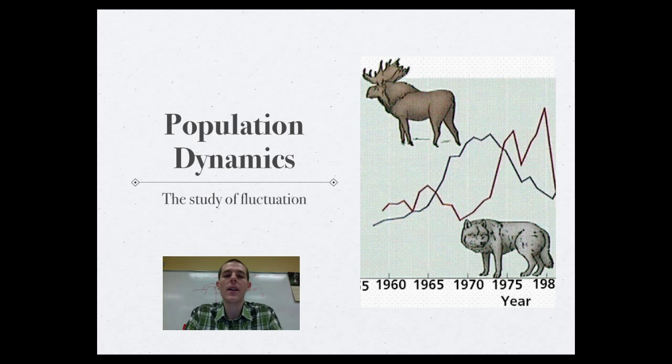And final slide for the day is population dynamics. Population dynamics is the study of fluctuations in population size, where they go up and they go down and they go up and they go down. For a long time, it was thought that bigger animals, especially mammals, population sizes didn't fluctuate, but many studies have shown that, especially for big mammals, population sizes do fluctuate from year to year.